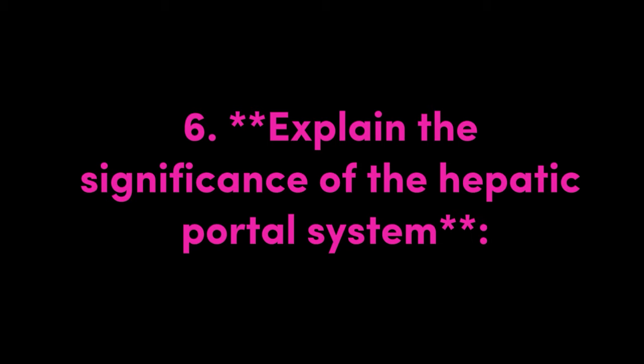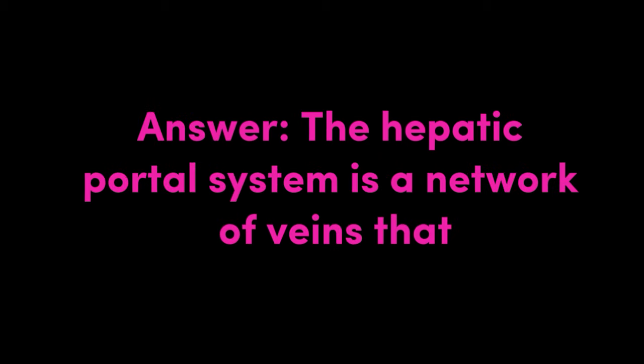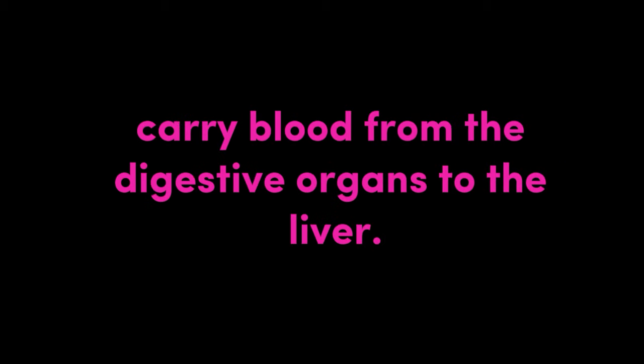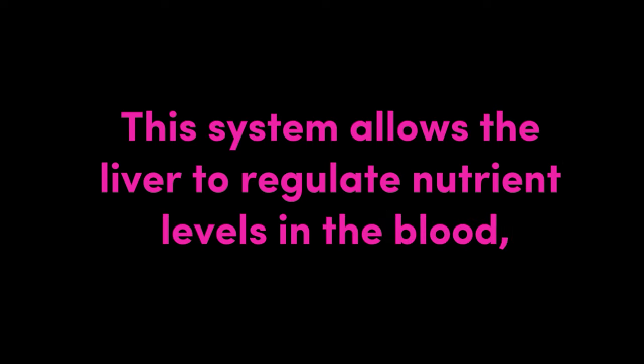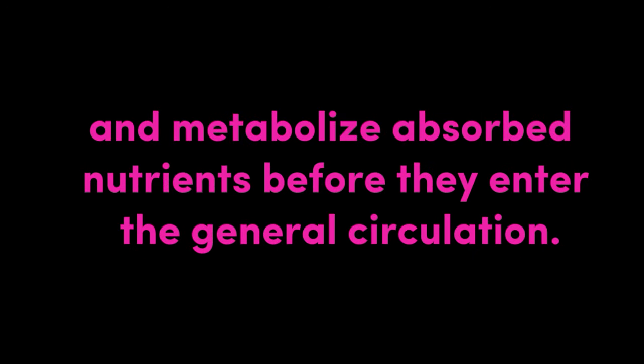Question 6: Explain the significance of the hepatic portal system. Answer: The hepatic portal system is a network of veins that carry blood from the digestive organs to the liver. This system allows the liver to regulate nutrient levels in the blood, detoxify harmful substances, and metabolize absorbed nutrients before they enter the general circulation.